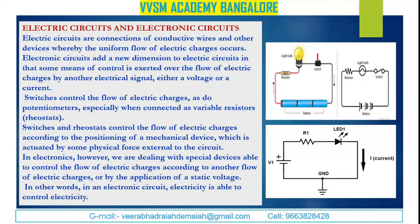Now let us discuss the distinction between electric circuits and electronic circuits. Electric circuits consist of connections of conductive wires and other devices through which a uniform flow of electric charges occurs. Electronic circuits add a new dimension: some means of control is exerted over the flow of electric charges by another electrical signal, either a voltage or a current.